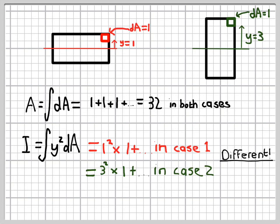In the second case, however, the small piece of area has a y value of 3, so we end up with 3 squared times 1. Or in other words, that piece of area has 9 times as much importance for the second moment of area as the one in the first case.